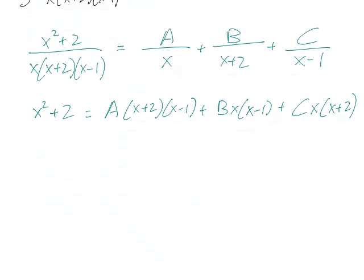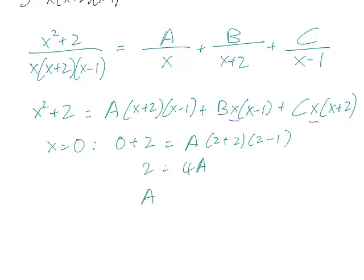Now, if you notice, if we let x equal 0, then the terms with B and C are going to cancel out because we have this x here and this x here. So when we let x equal 0, we have 0 plus 2 on the left equals A times 2 plus 2 times 2 minus 1. So 2 equals 4A, therefore A equals 1/2.